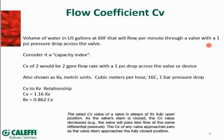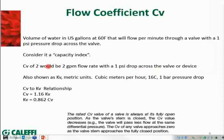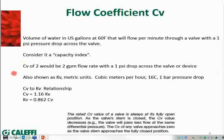A CV of two means that a two-gallon-per-minute flow through a valve or device would have a one PSI pressure drop. If you had a differential pressure gauge that could measure the pressure on the inlet and outlet side, at this flow rate of two GPM you would have a one PSI drop, and that's how they come up with the CV number.